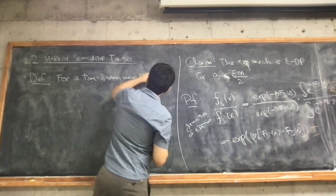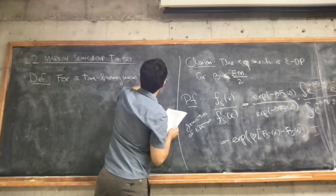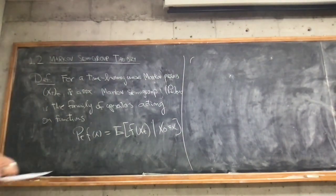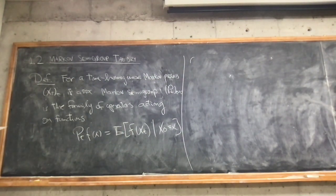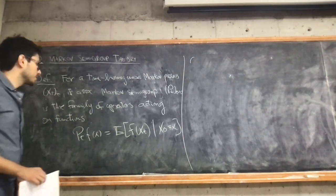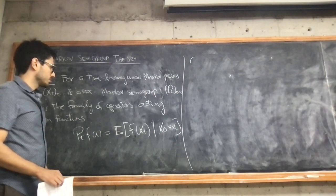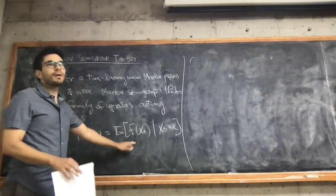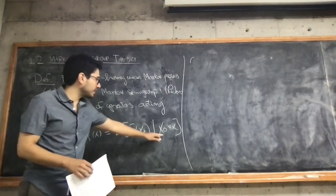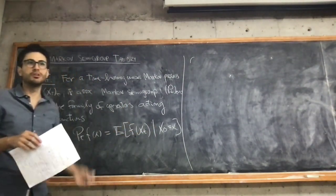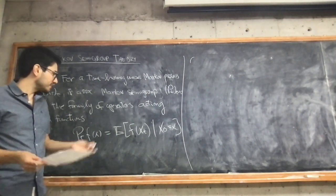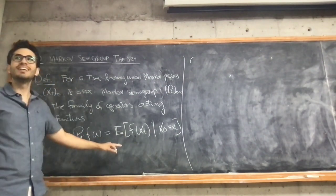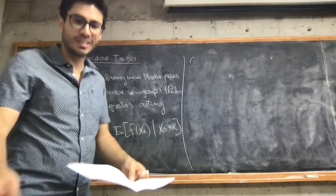We consider a time-homogeneous Markov process. This is a mechanism for representing transition probabilities — if f is the indicator of a set A, you have the probability that X_t is in A given that we started at x. By the Markov property we have: P_0 is the identity, and P_s composed with P_t equals P_{t+s}. These are the properties that define a semigroup — that's why we use that name.